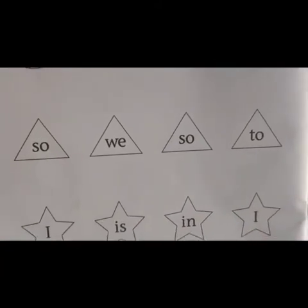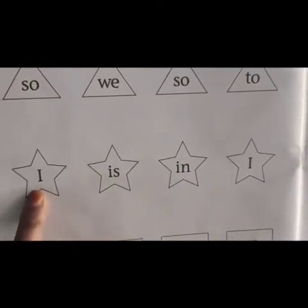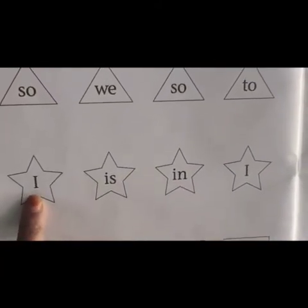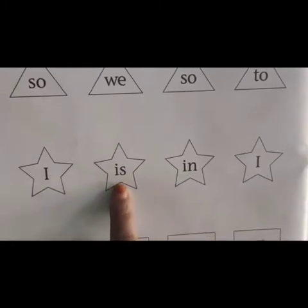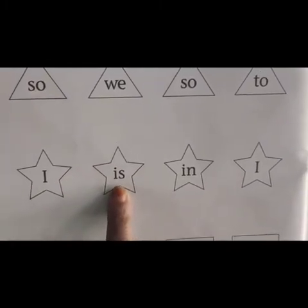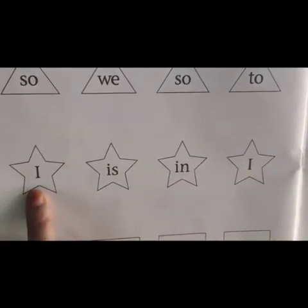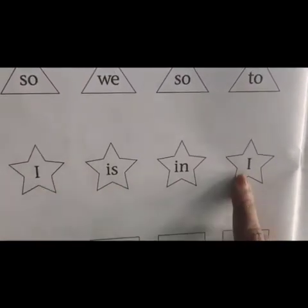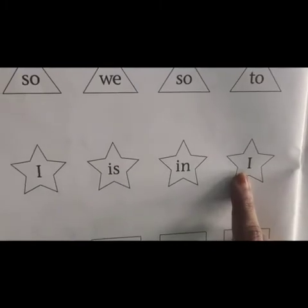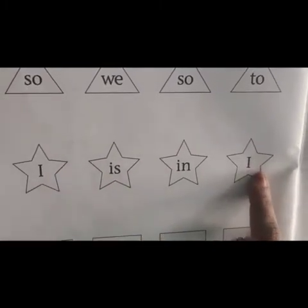Next. The next picture is star and the letter is I. The second one is I-S. Then I-N-N, then I. So the first picture and the fourth picture are the same — I and I. You have to color those.